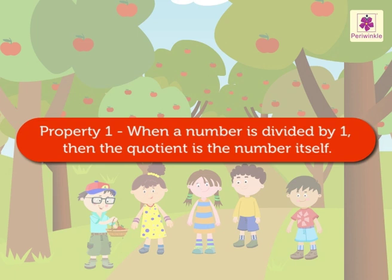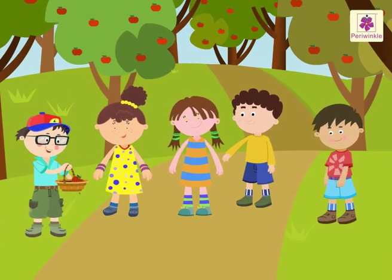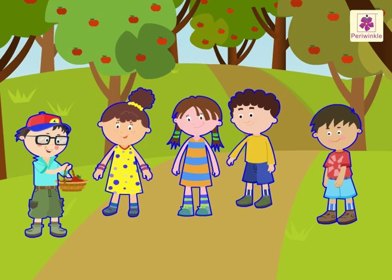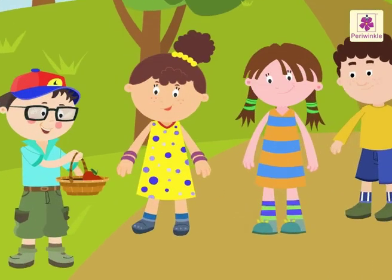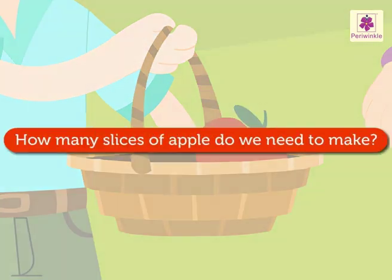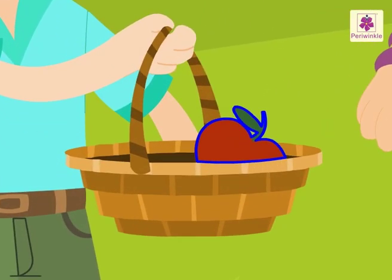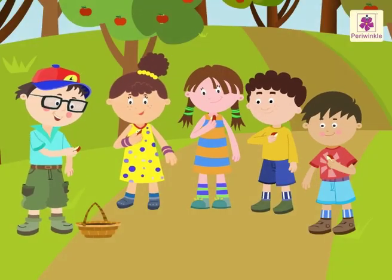Property one: when a number is divided by one, the quotient is the number itself. Let us see how. There are five kids in the farm, but there is only one apple in the basket. How many slices of apple do we need to make so that the apple is distributed equally? Since there are five kids and only one apple, we need to make five slices.